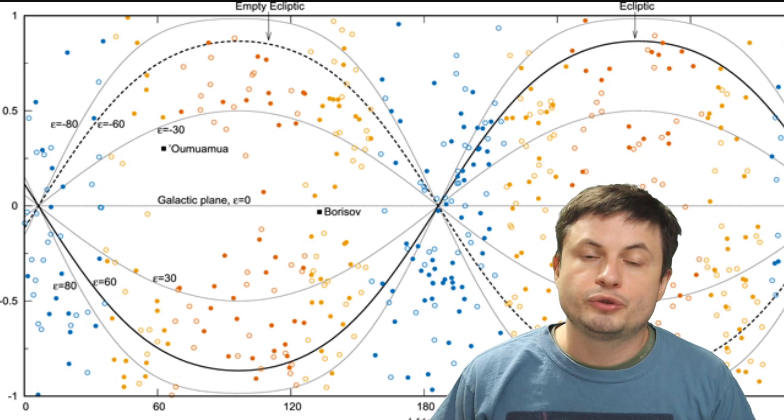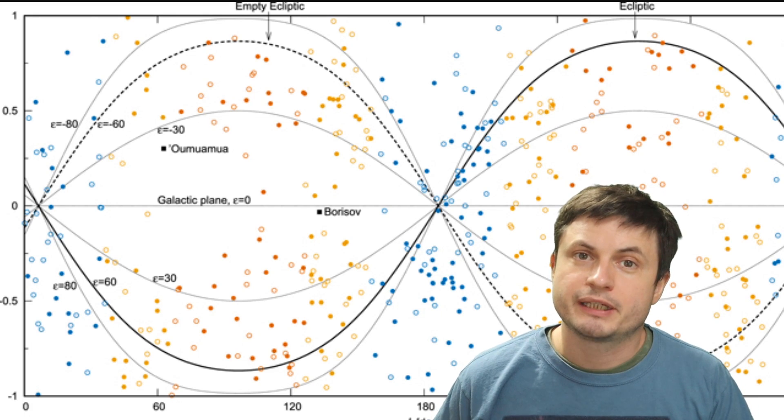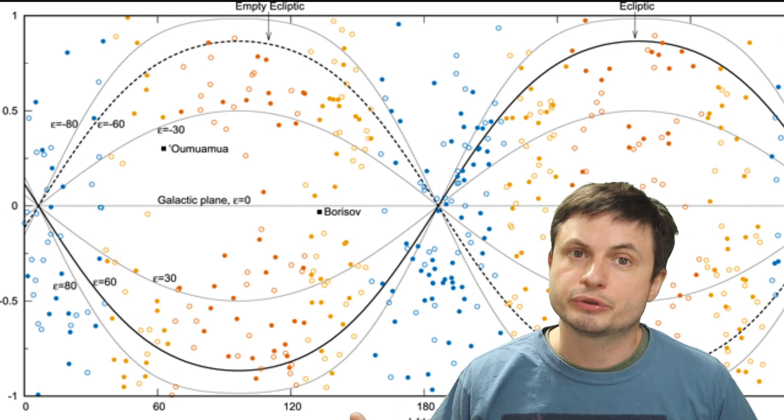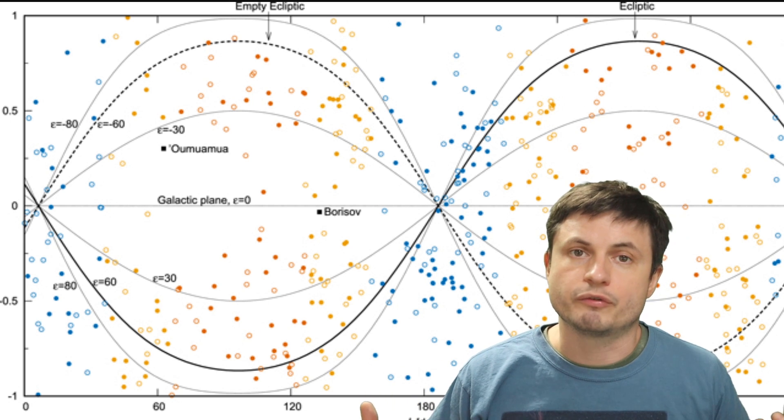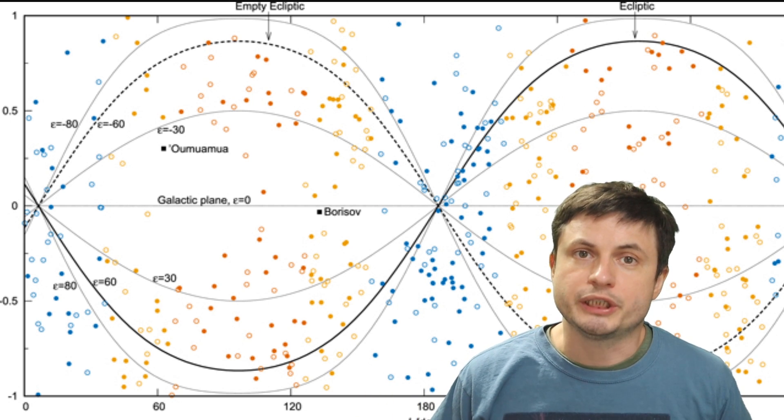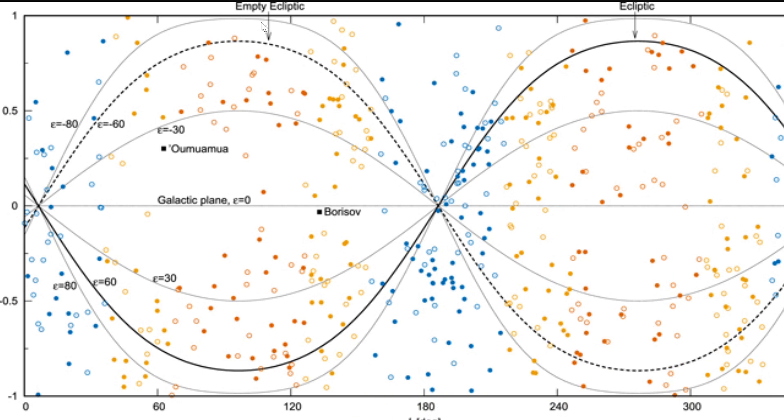The reason they actually call it that is pretty interesting. What they did to try to justify their idea is run a few simulations to try to see what happens to the solar system as it evolves over billions of years. In their simulation, in the beginning, this plane was completely empty. There was nothing in it. That's why they decided to call it the empty ecliptic.